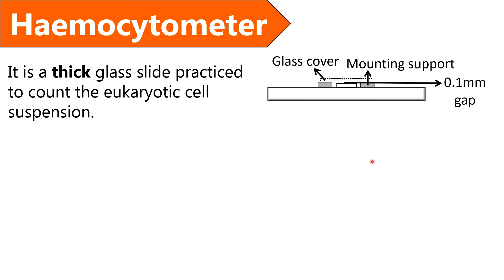A hemocytometer refers to a microscope slide or a thick glass slide that is extensively used to enumerate or calculate the number of blood cells after diluting the given blood sample.